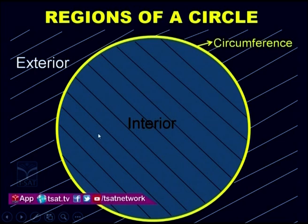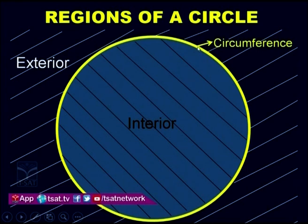Now we will see the regions of a circle. Whatever is outside the circle is called the exterior region of the circle. This whole region outside the circle is the exterior region. The points which are lying on the circle form the circumference of the circle — the yellow colour line shown is the circumference of the circle.